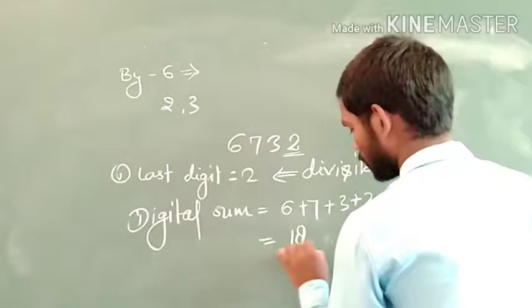Now we find the difference: 31 minus 20, which equals 11. And 11 is divisible by 11, which shows that this number is also divisible by 11. Therefore, this number is divisible by 11.